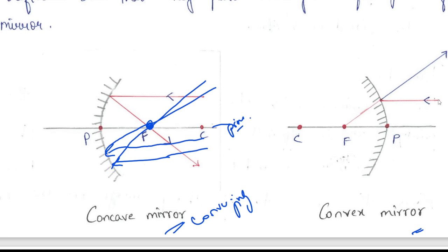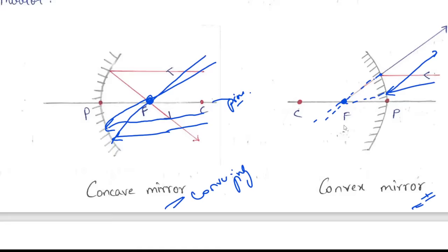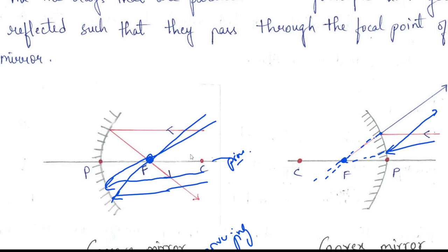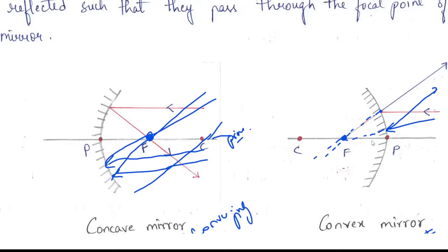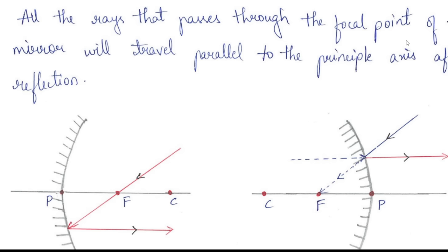In the case of concave mirror, parallel rays converge through focus after reflection. For convex mirror, the incident ray follows the same rule but diverges. If we extend the diverging ray from the back side, it also passes through the focus. Whether concave or convex, parallel incident rays will pass through the focus. So we have two special rays: one parallel ray and one ray which passes through C.